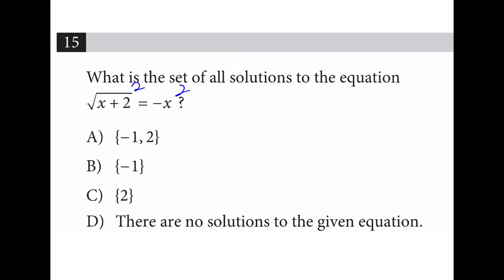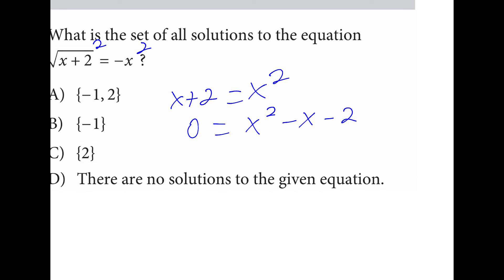First thing I do is I square both sides. So on the left I have x plus 2 and on the right I have x squared. If I set this equal to 0, I'm going to be moving over the x and the 2. So what is a factor of 2 that adds up to 1? It's going to be 2 and 1. The 2 will be negative and the 1 will be positive. So we have 2 or negative 1.